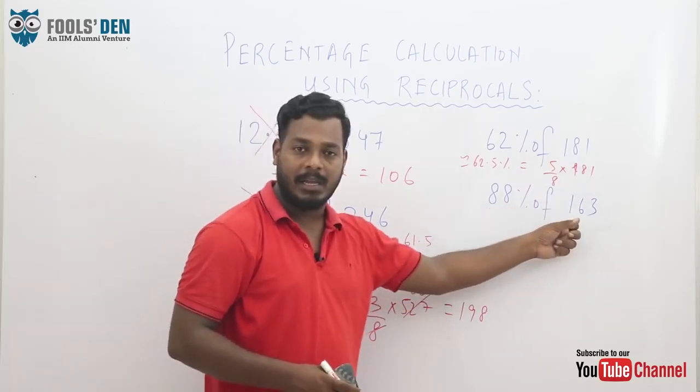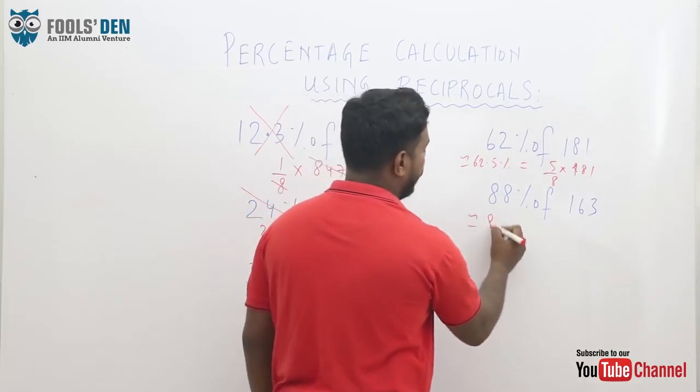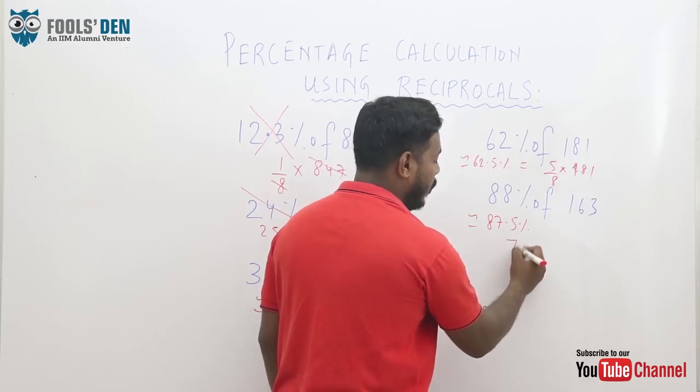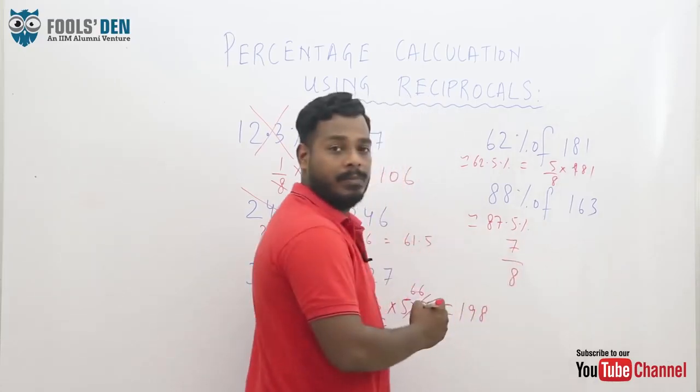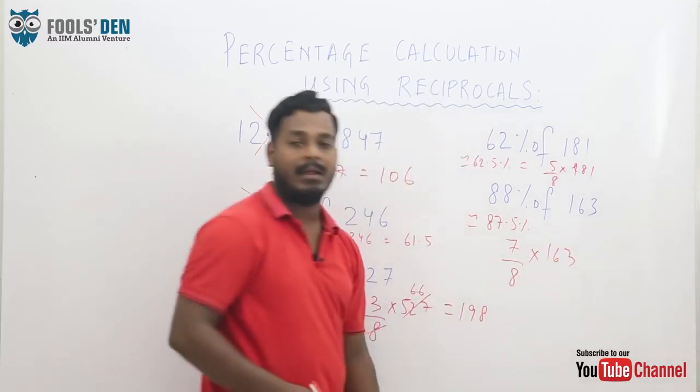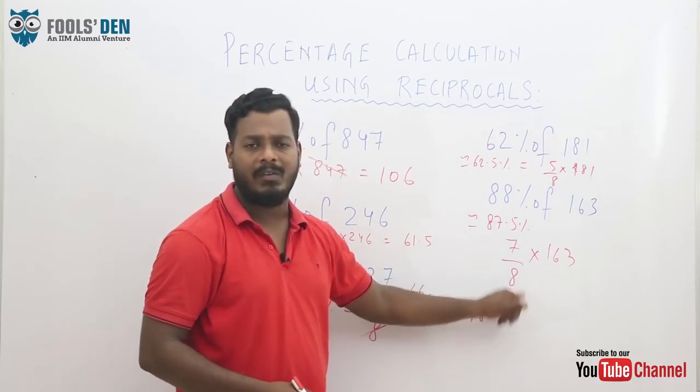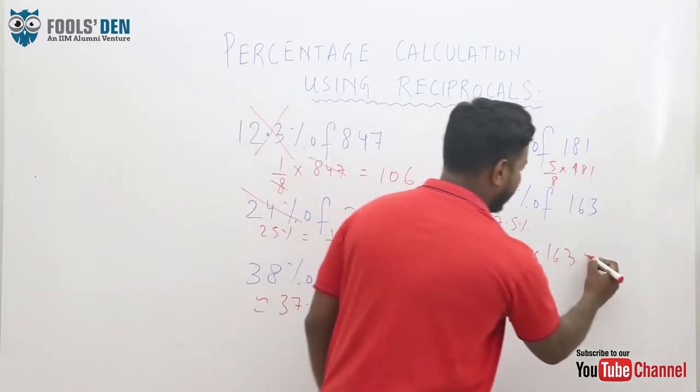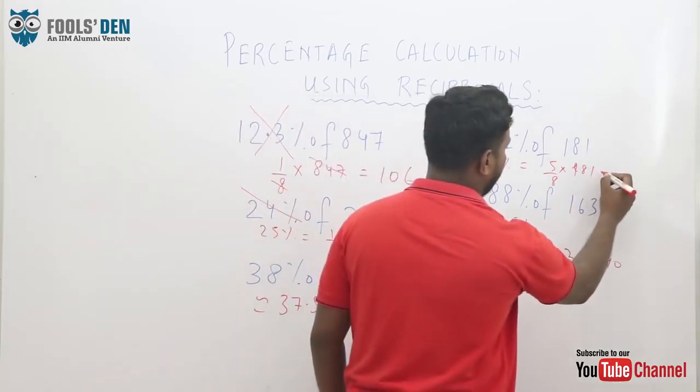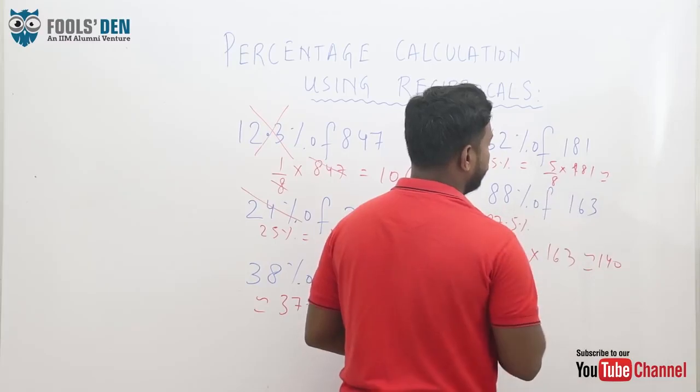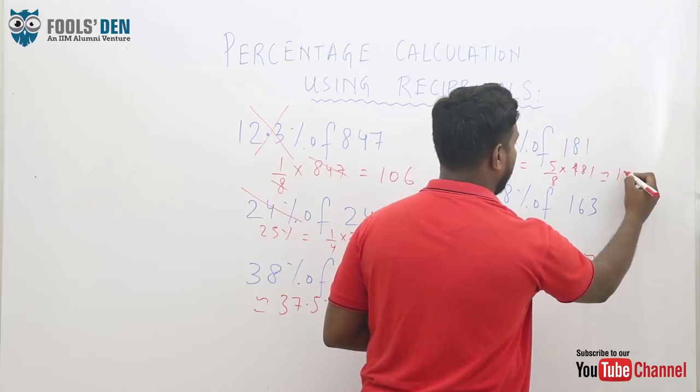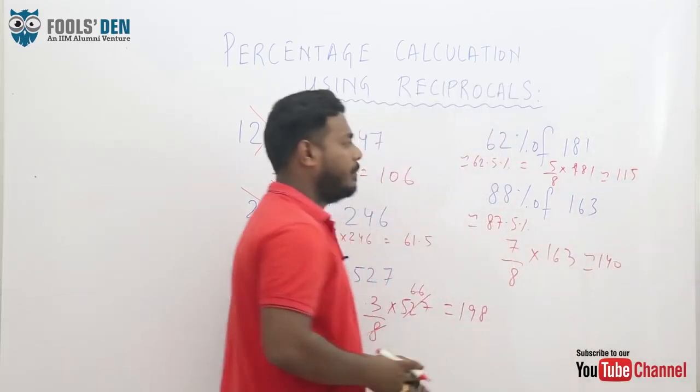Similarly, 88 percent of 163. 88 percent can be approximated to 87.5 percent. And 87.5 is equal to 7 by 8. So 7 by 8 of 163 again can be calculated easily because just you need to do one division and one multiplication. This is approximately 140. And this would approximately be 21. 23 into 5, approximately 115.